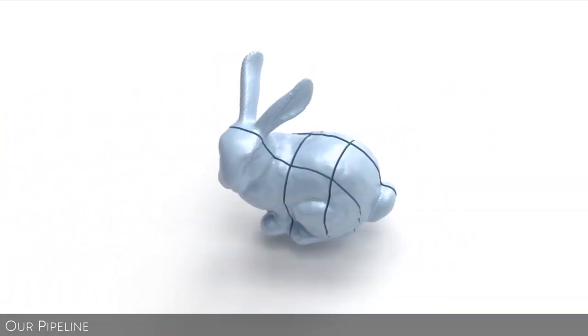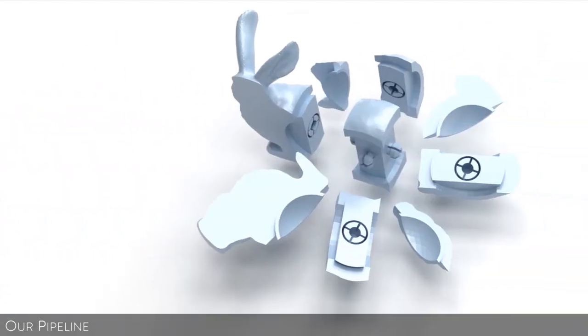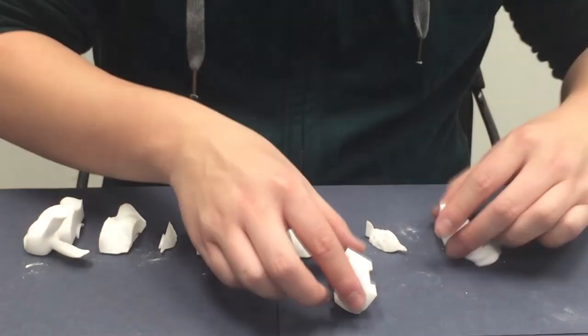Once the puzzle has been sliced up into pieces, we deform the mesh to avoid any possible collisions that can occur in other configurations of the pieces. Finally, the internal mechanism is generated and the model is ready for fabrication.